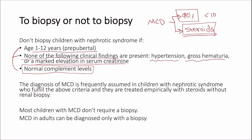Generally, most children with minimal change disease do not require a biopsy, while minimal change disease in adults can only be diagnosed with a biopsy. Presentation below one year of age, especially within the first three months of life, may be due to a congenital form of nephrotic syndrome that is similar to minimal change disease except that it is poorly responsive to steroids.